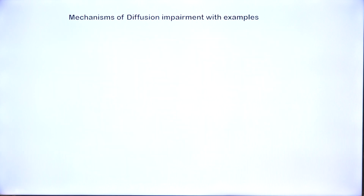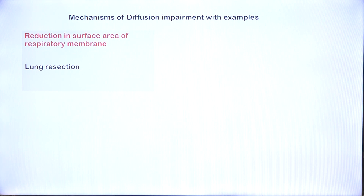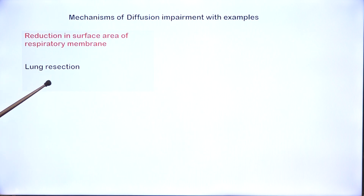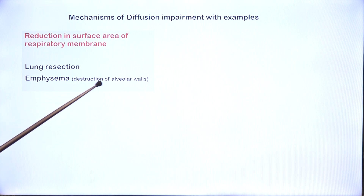Let us now look at mechanisms of diffusion impairment and some disease names. The conditions where there can be a reduction in surface area — the easiest to understand is lung resection, where due to some reason one lung has been removed. Either one whole lung is removed or a section of the lung is removed due to, for example, a tumor. When a portion of the lung is resected, the surface area available for gas exchange would be less than normal, resulting in diffusion impairment.